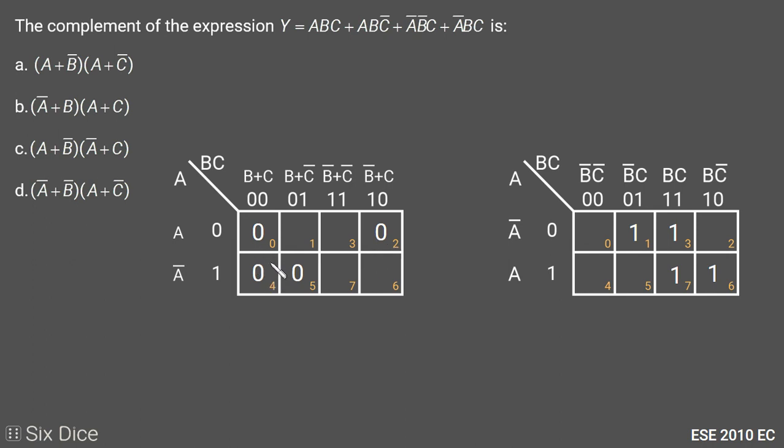Now we will minimize this POS K-map to get the complement. The first pair we will make with the 4th cell and 5th cell, which will be minimized as Ā plus B.